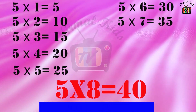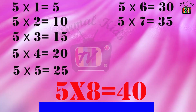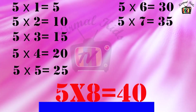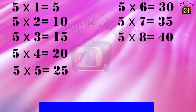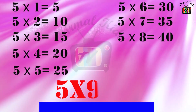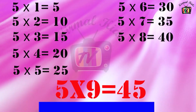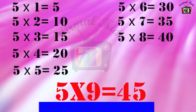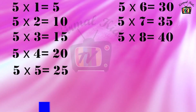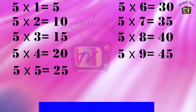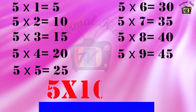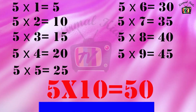5 7's are 35. 5 8's are 40. 5 9's are 45. 5 10's are 50.